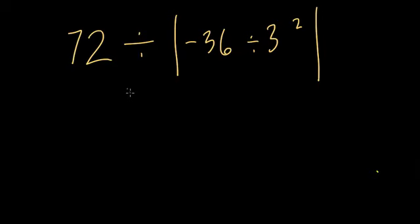If they want you to simplify this expression, what you have to realize is that these two lines right here, these vertical lines that are straight up and down, represent the absolute value, or distance from zero.